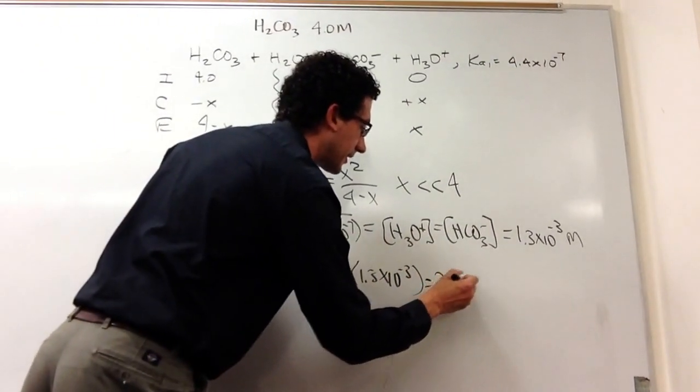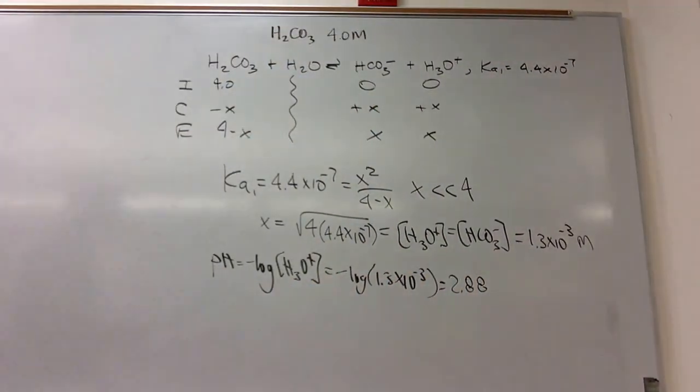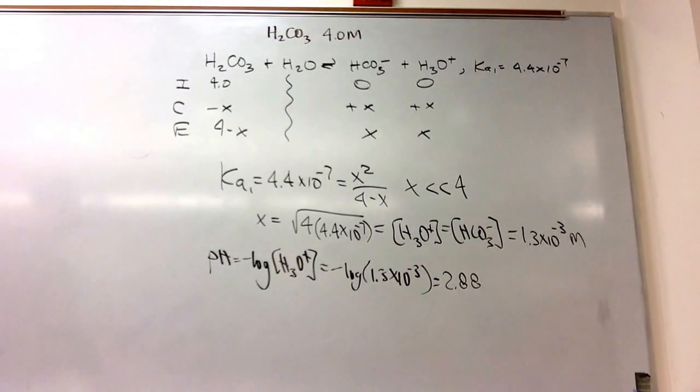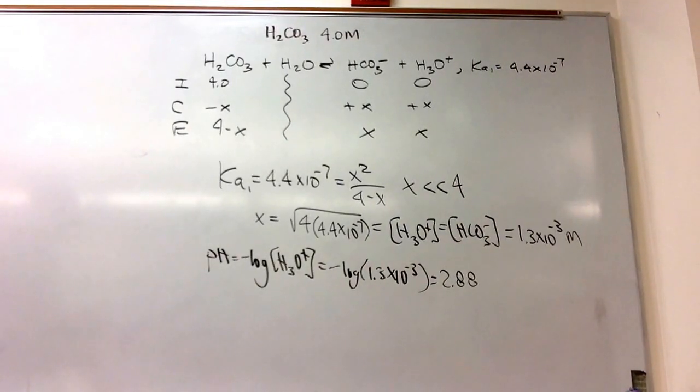And that's 2.88. And that makes a lot of sense. It's less than 7, 2.88. So it's acidic is what we expected. So that's the first part. That's the hardest part of the problem.